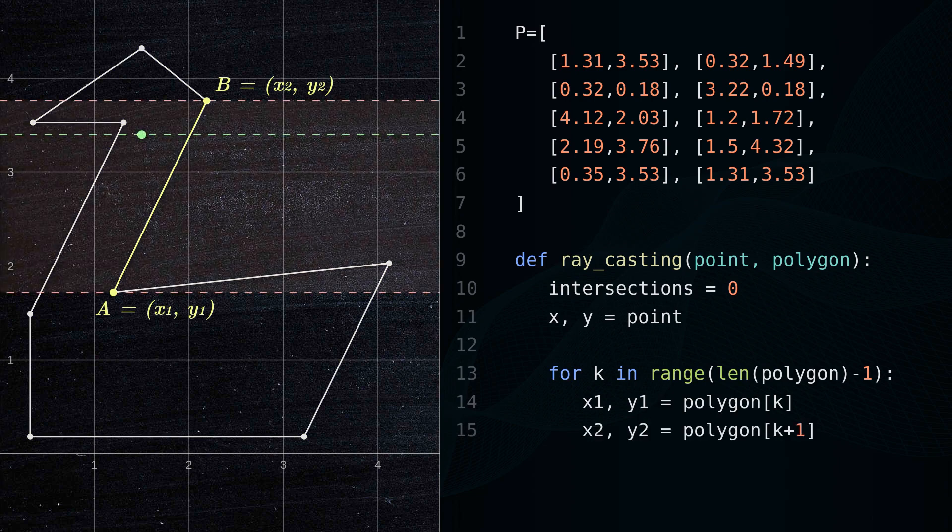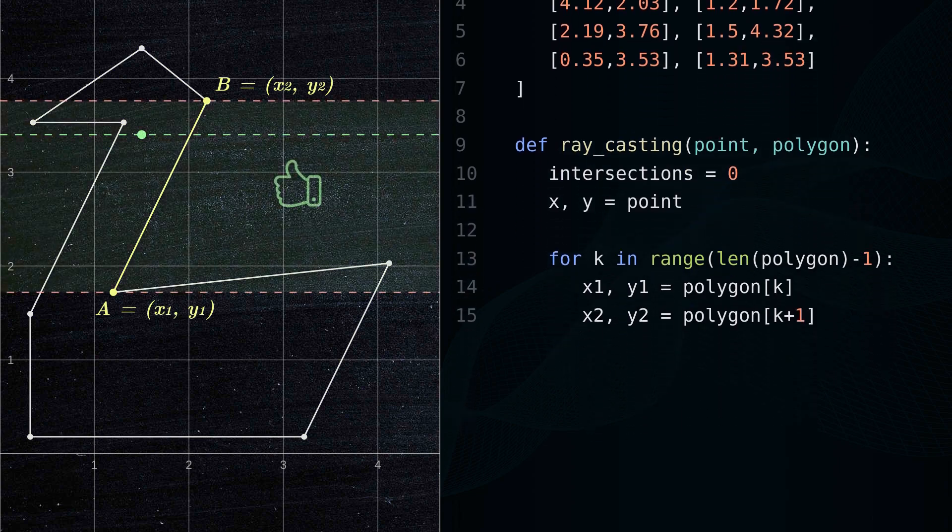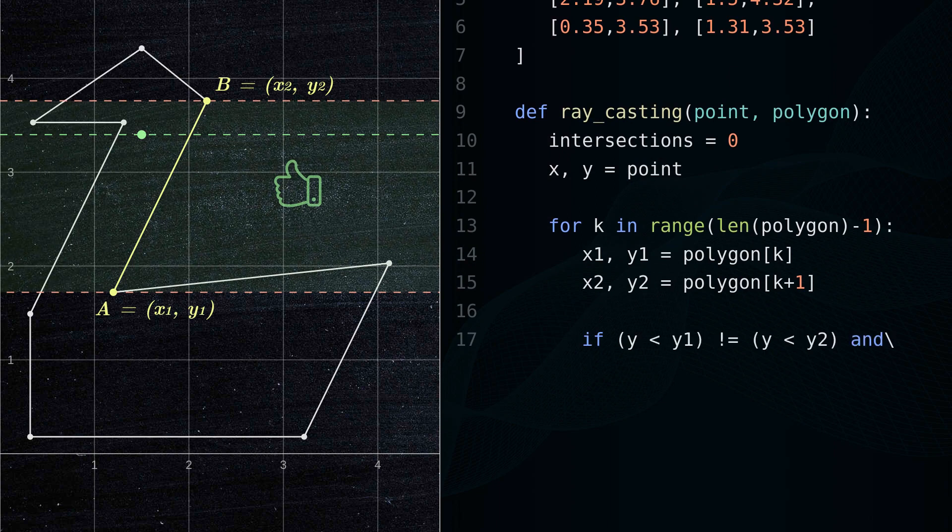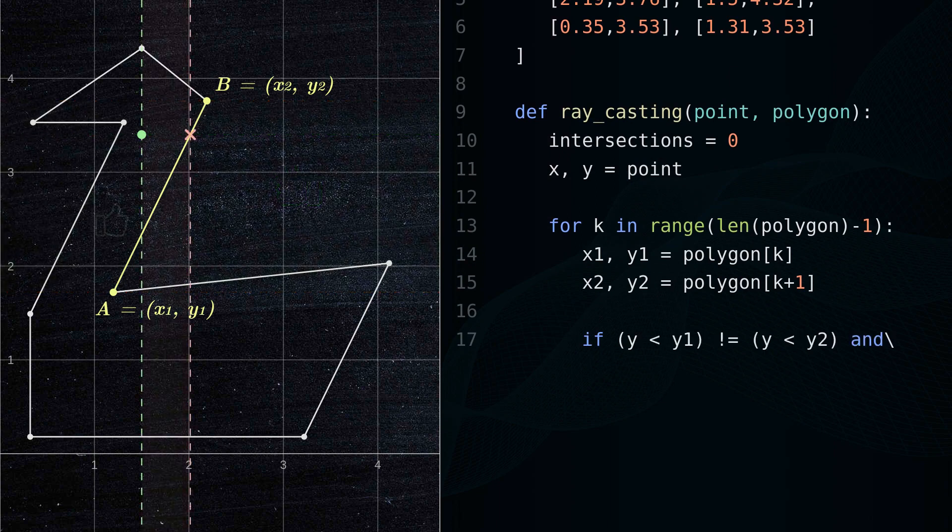If the point is between A and B in the vertical axis, and is less than the intersection point in the horizontal axis, then we can count it as an intersection.